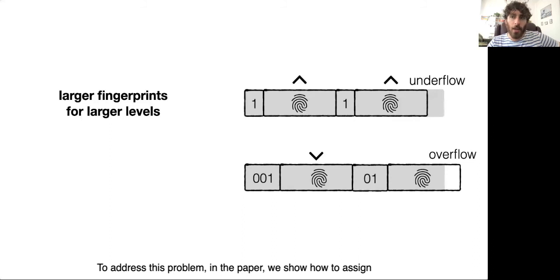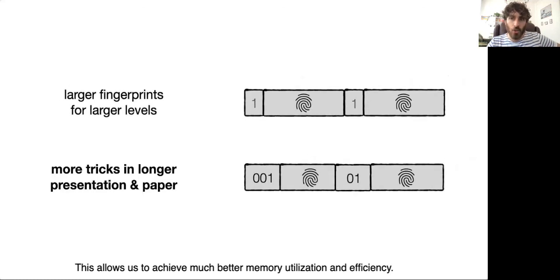To address this problem in the paper, we show how to assign larger fingerprints to larger levels to make up for the fact that they have shorter codes. This allows us to achieve much better memory utilization and efficiency. In the paper, we explore far more tricks to achieve good alignments, as well as in the longer presentation.